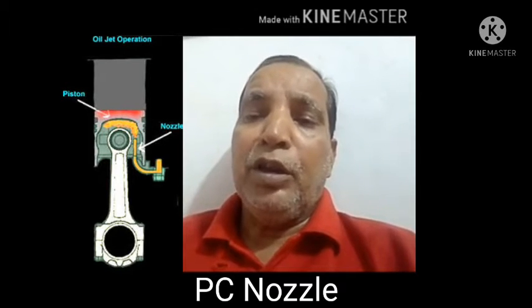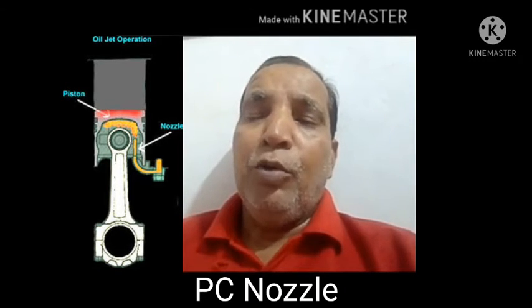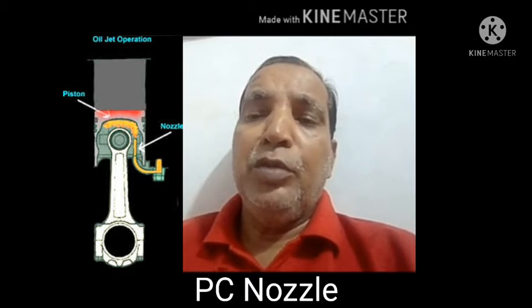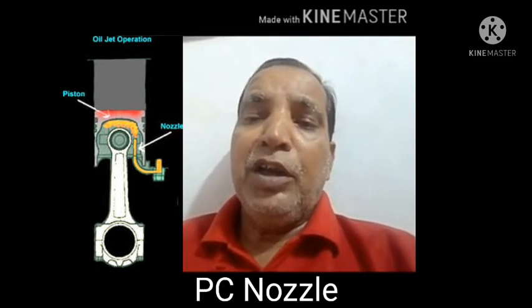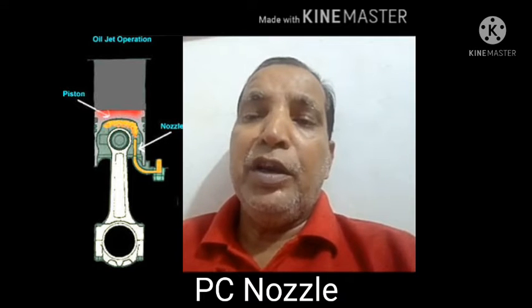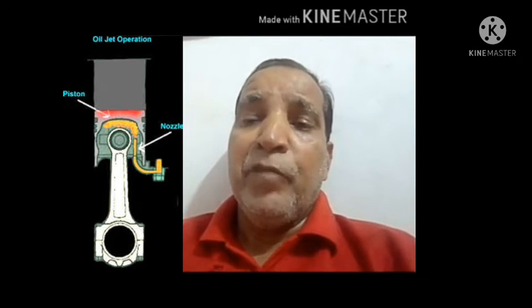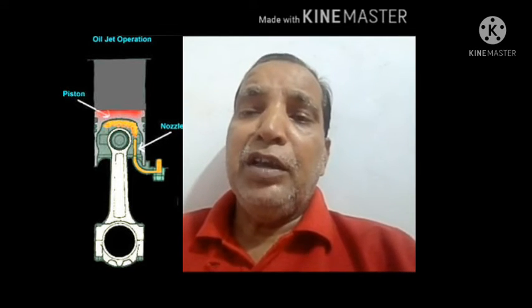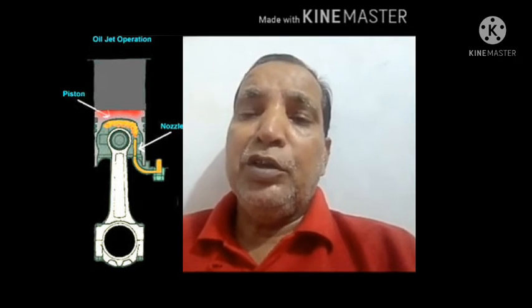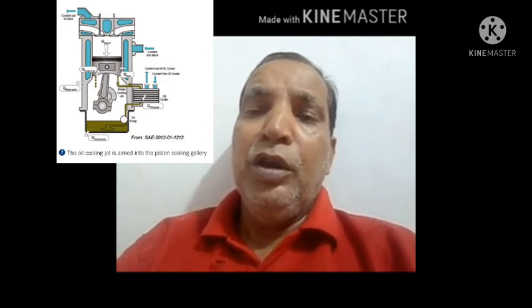Today I have discussed the function of the piston cooling nozzle. I have already showed you the photograph of where the PC nozzle is. The PC nozzle is fitted in the main oil gallery and it throws the lube oil inside the piston. The piston also has an oil ring, through which it lubricates the cylinder liner.